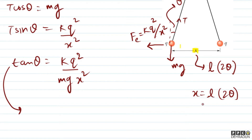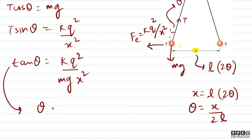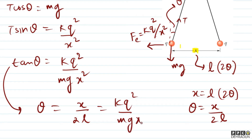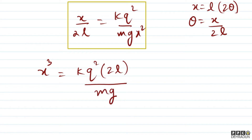2θ के बराबर x आ रहा था, तो हम लोग θ = x/(2l) लिख सकते हैं। Small angle के लिए tanθ ≈ θ, तो tanθ = x/(2l) = kq²/(mgx²)। यहाँ से x³ = 2kq²l/mg आ जाएगा।